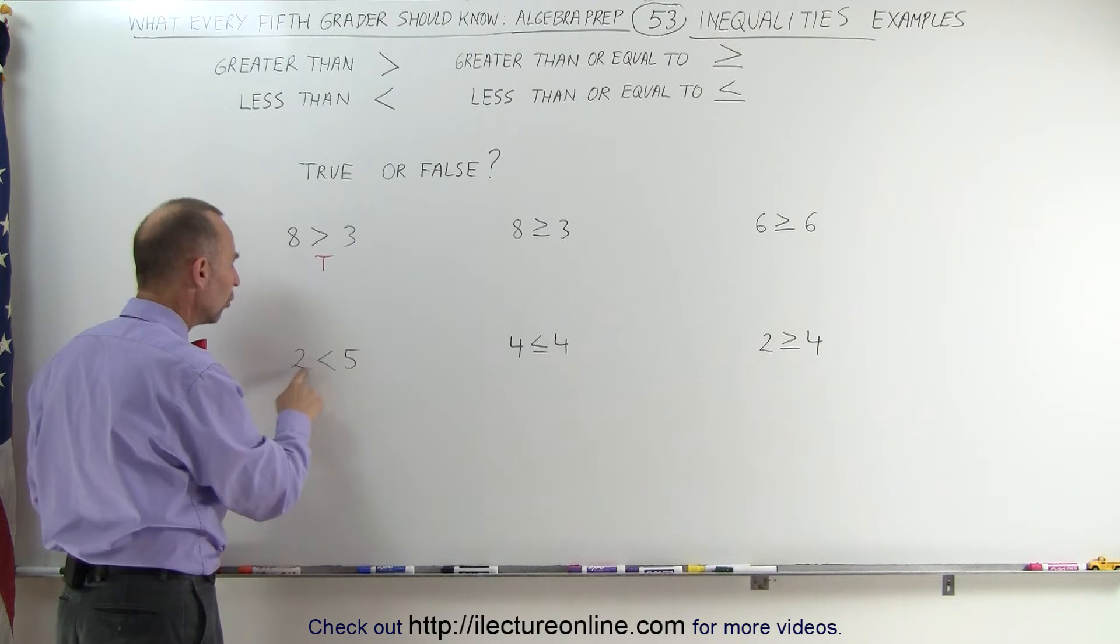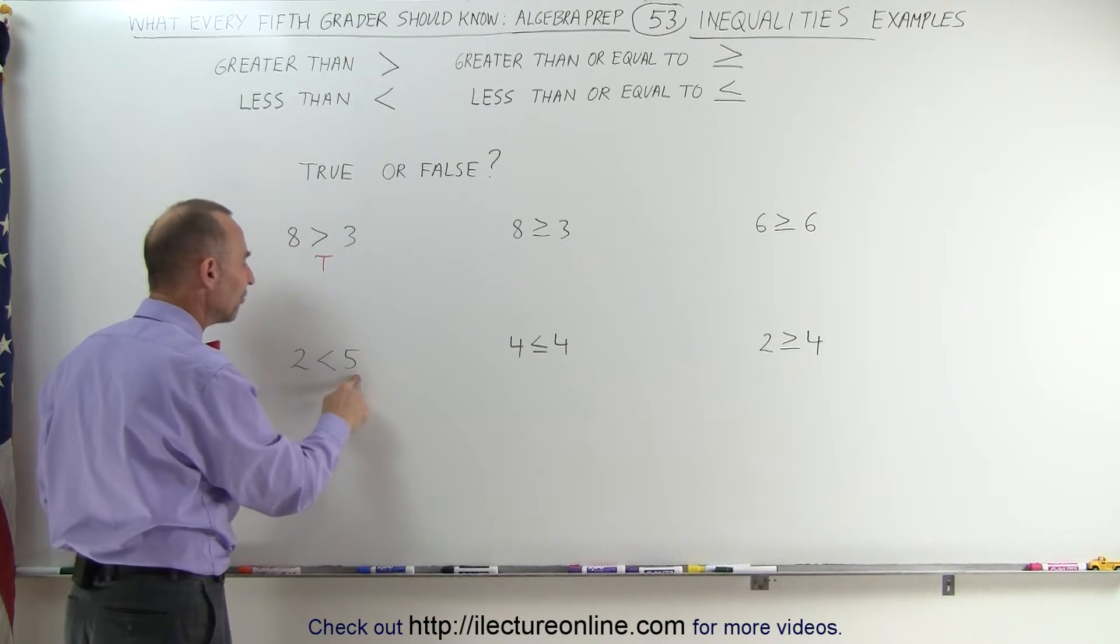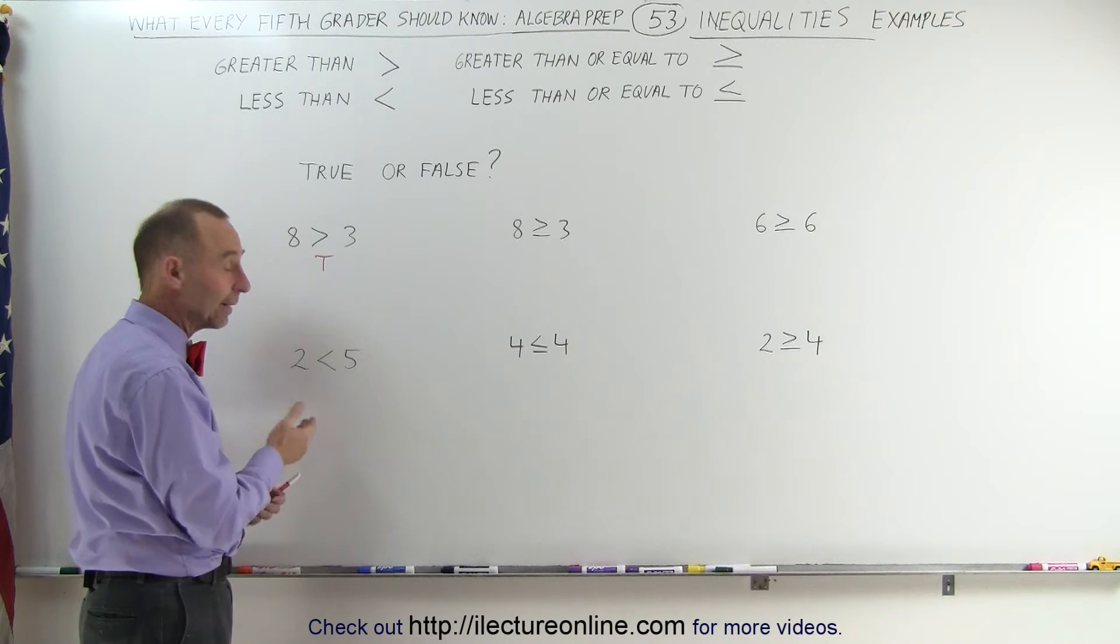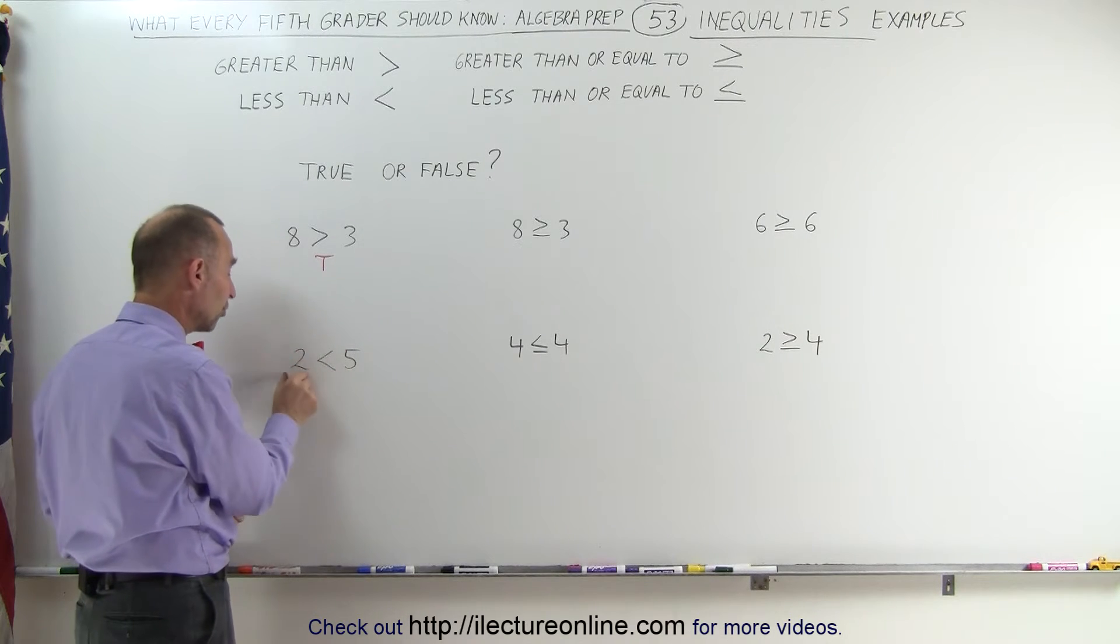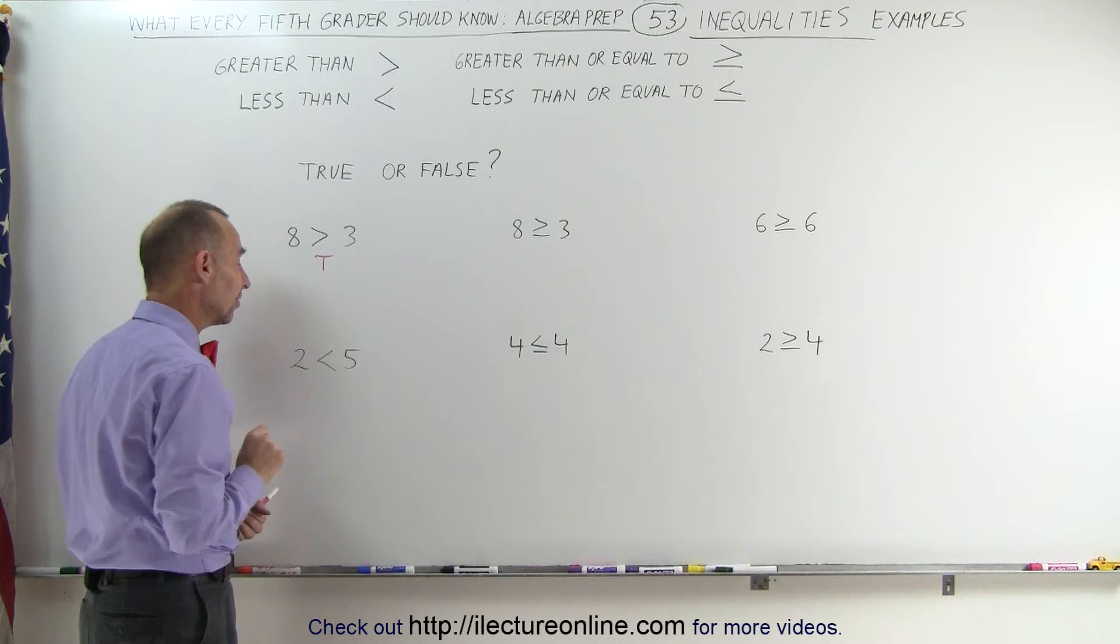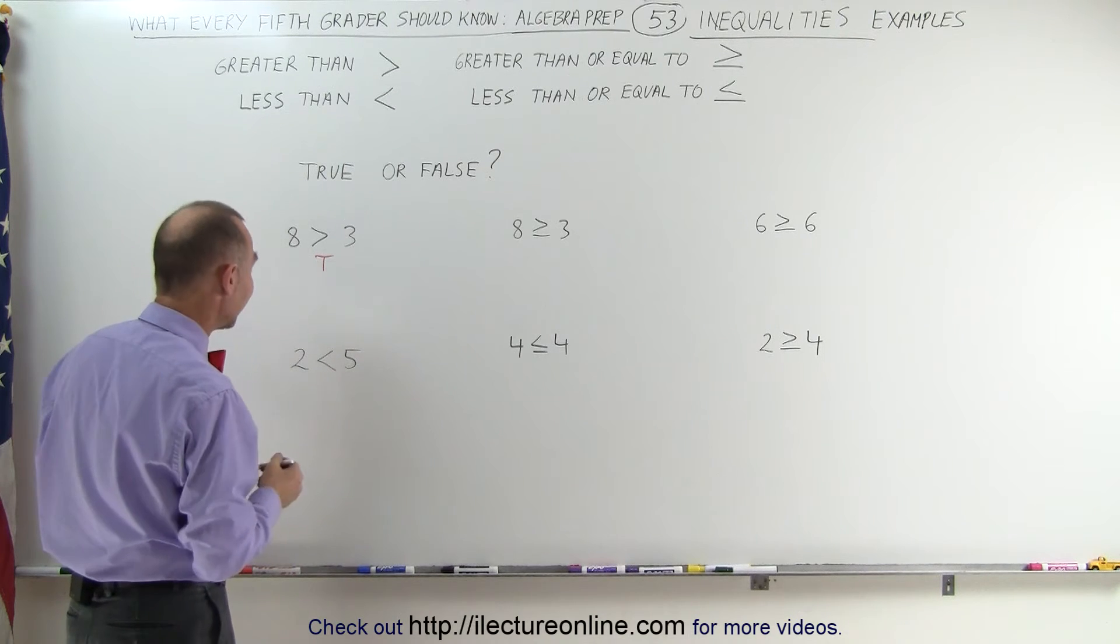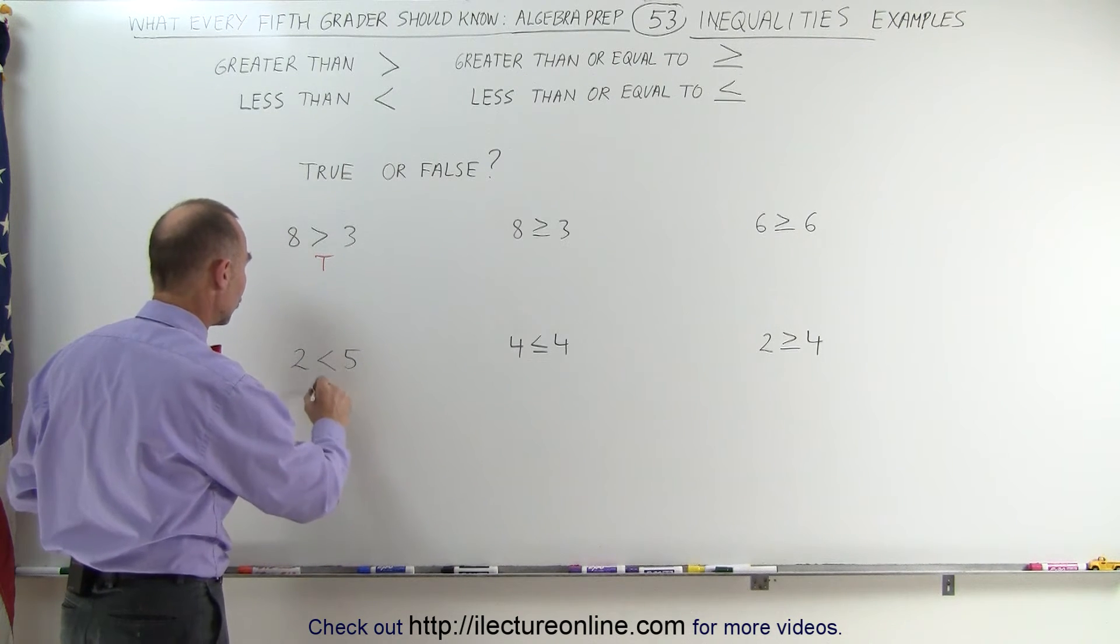How about, is 2 smaller than or less than 5? When we see the symbol like that, the left side, the pointy side, should be smaller than the open side on this side. 2 is smaller than 5, 2 is less than 5, so therefore this is a true statement.